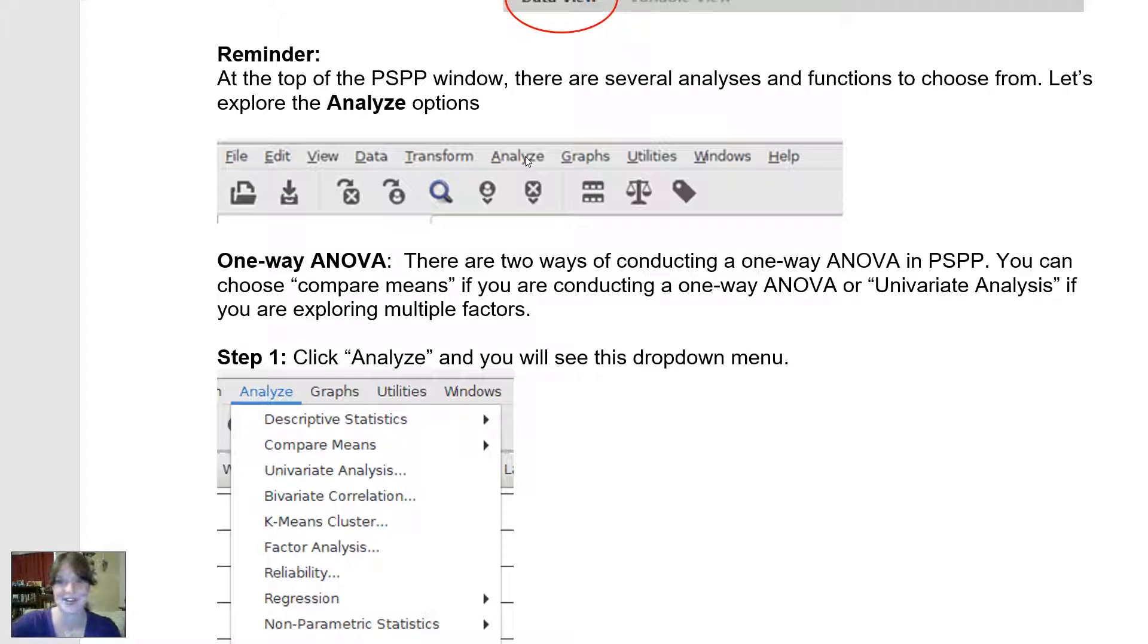We're going to use an ANOVA to explore to see if the averages among these three groups differ in terms of depression. Now, there are more advanced ANOVA questions we could ask that introduce multiple different variables. But for today, we're going to keep things simple and do an analysis of variance that is called a one-way ANOVA, where we look at how one factor, one group-based variable, impacts one quantitative variable.